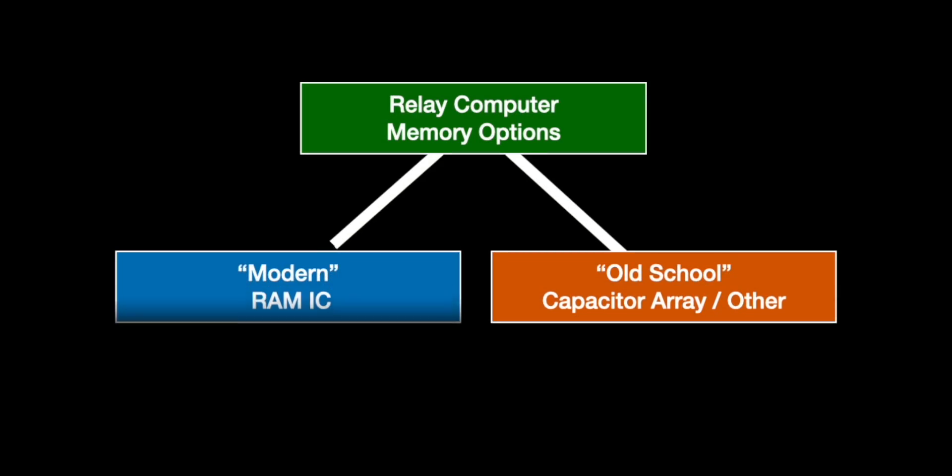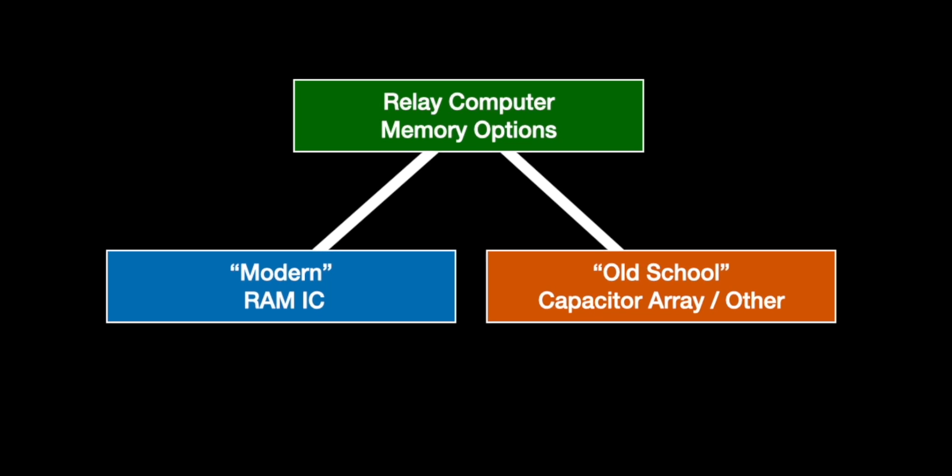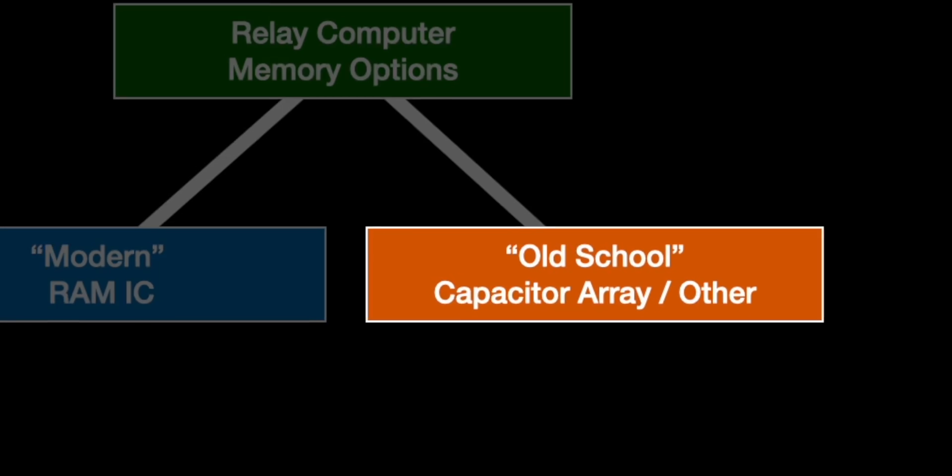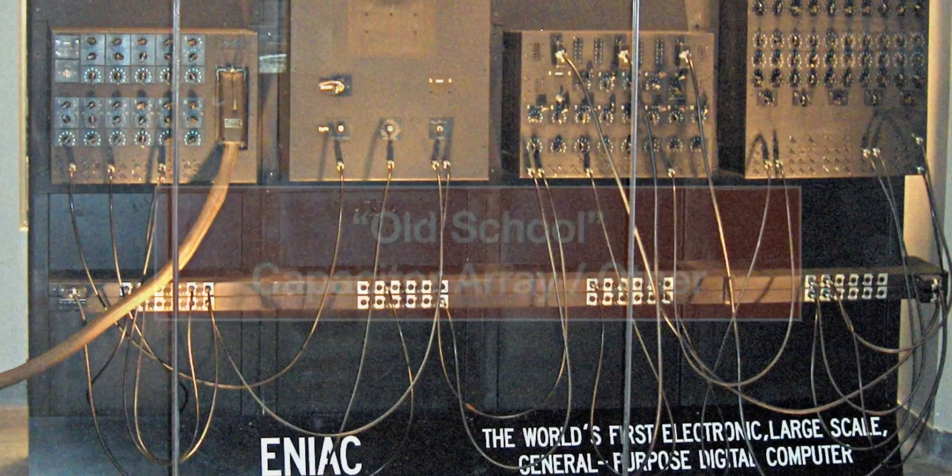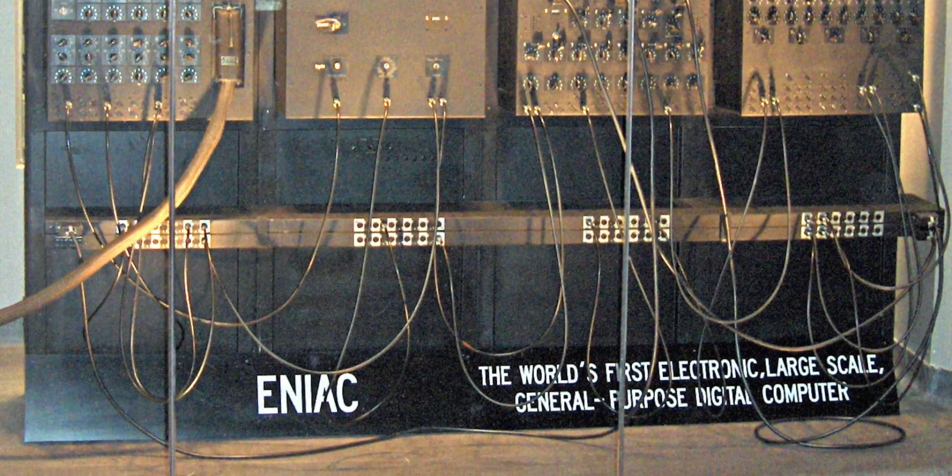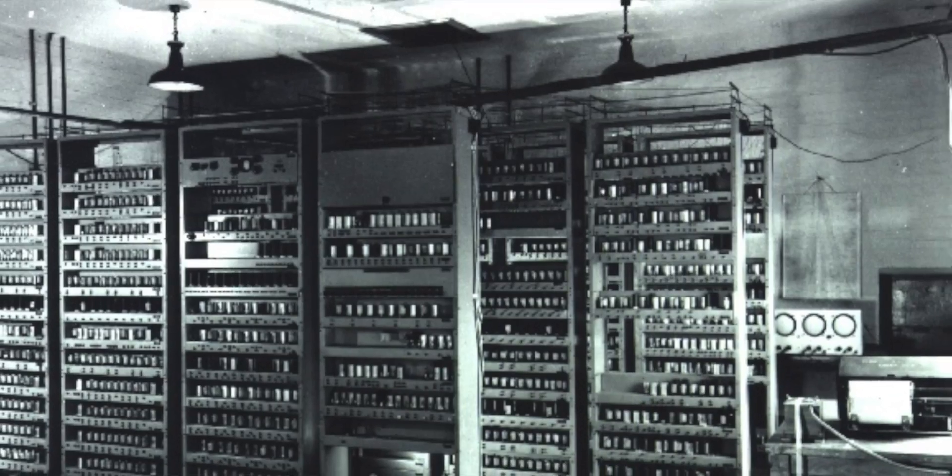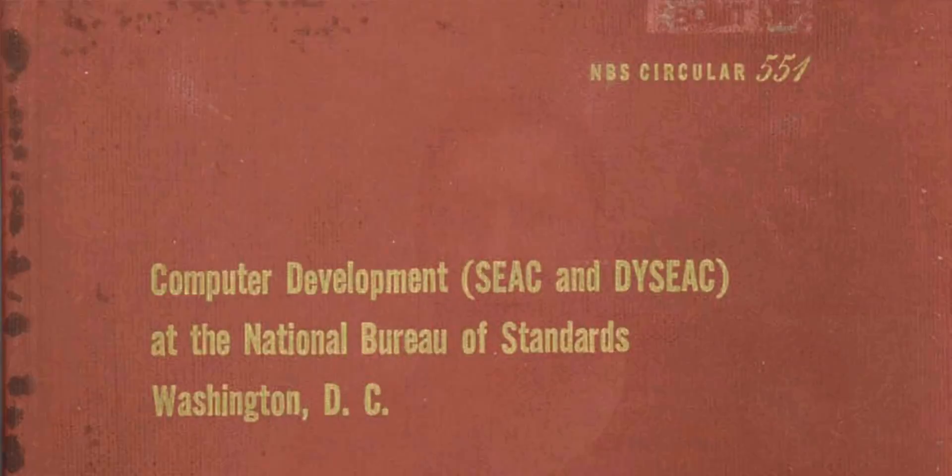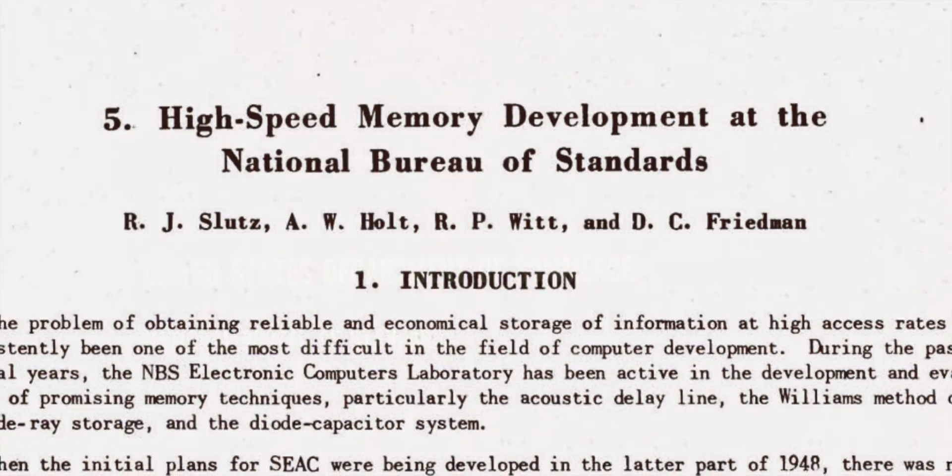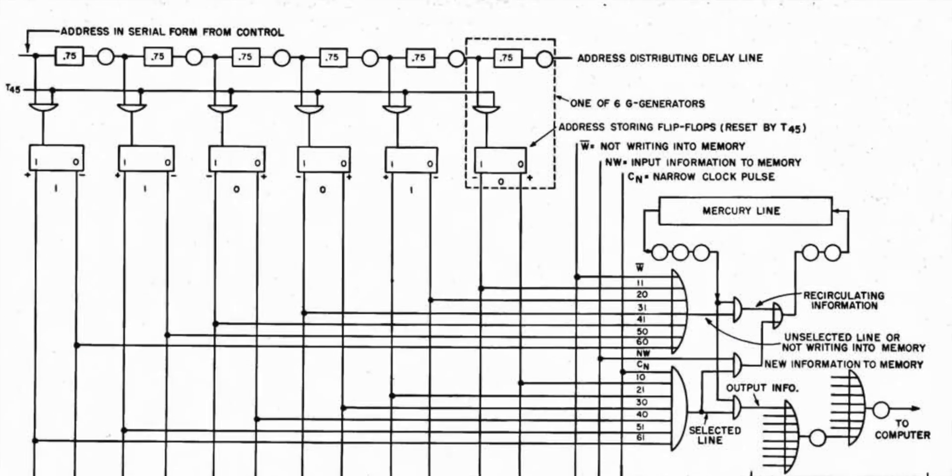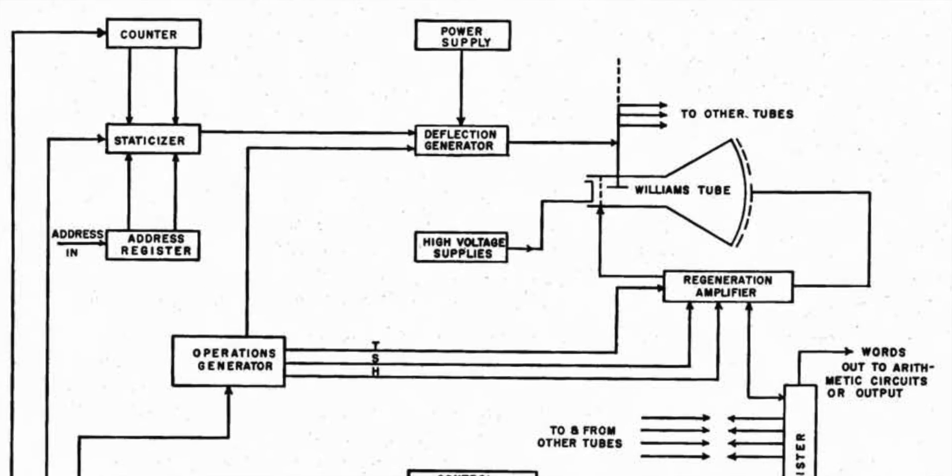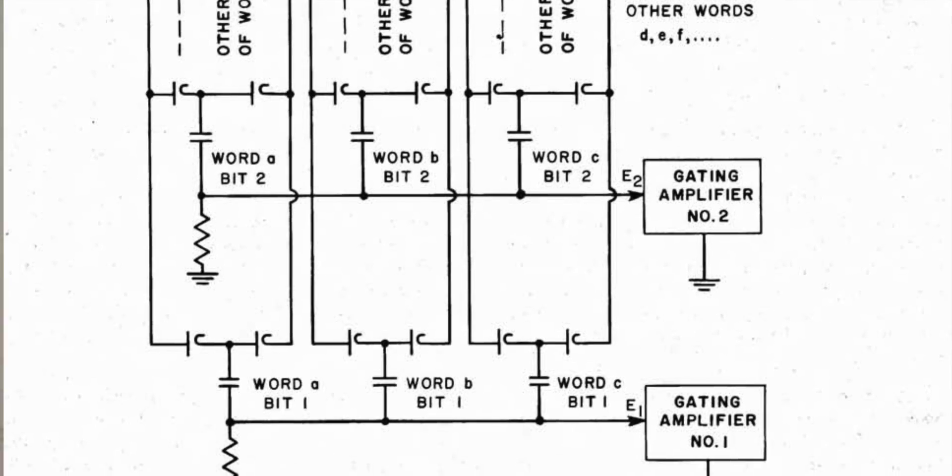In the previous video I mentioned that I was going to go in two different directions for the memory. So let's start with some old school memory, and by this I just mean that it's the type of memory that would have existed in the 1940s or 50s when relay computers were more popular. In my search I came across this amazing book that was published in 1955 and it contains this chapter that explains mercury delay lines, cathode ray tube memory and diode capacitor memory.